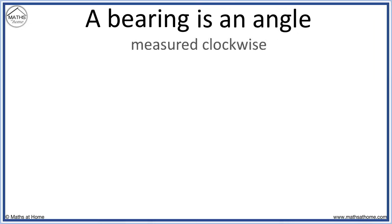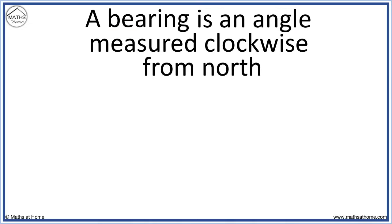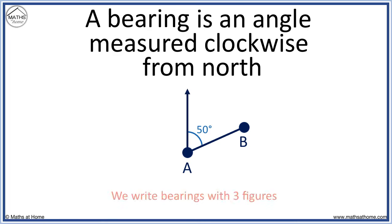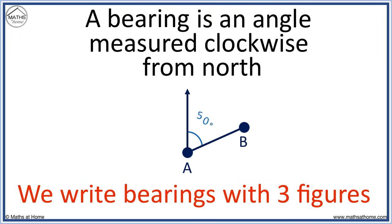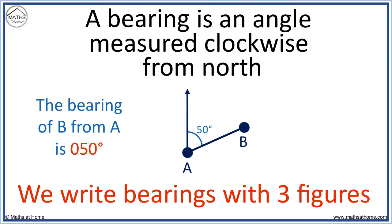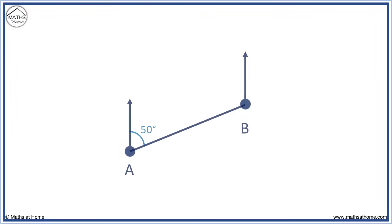A bearing is an angle measured clockwise from north. Starting at point A to get to point B, we measure the angle from north, shown pointing upwards. The angle is 50 degrees. We write bearings with three figures — 50 degrees only has two digits, so we put a zero in front of it. The bearing of B from A is 050 degrees.